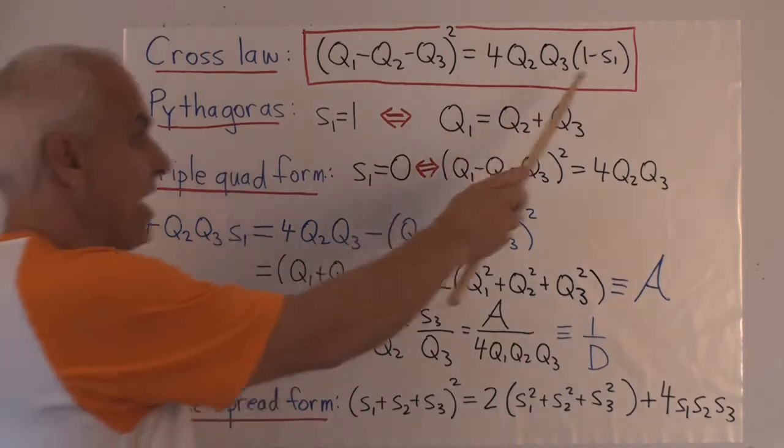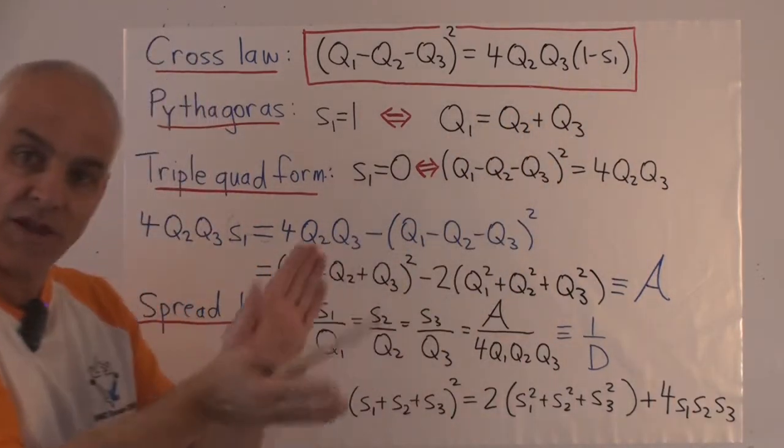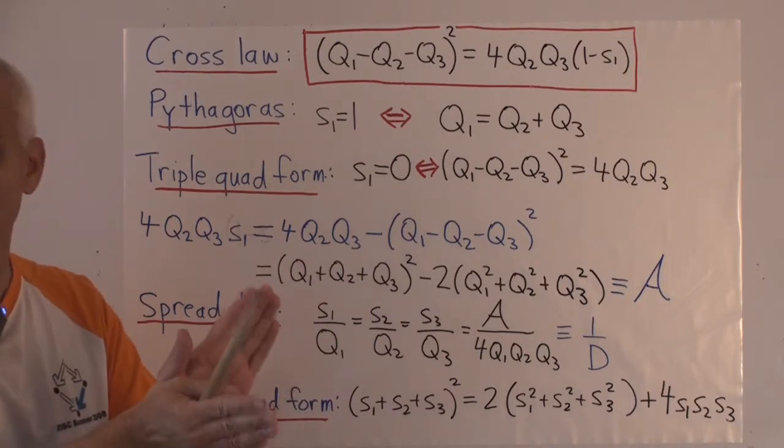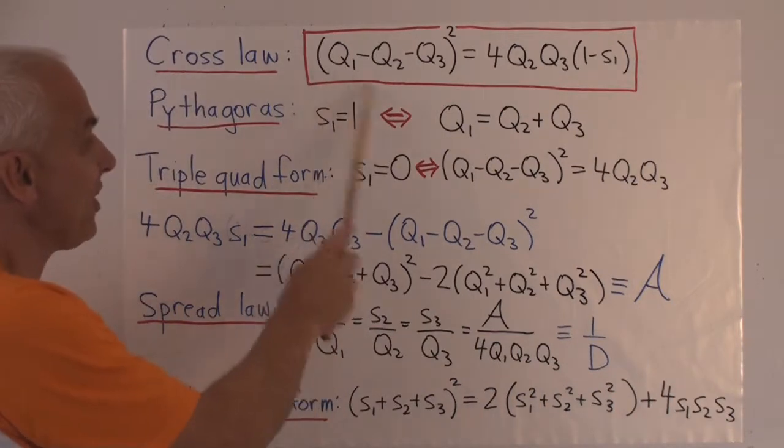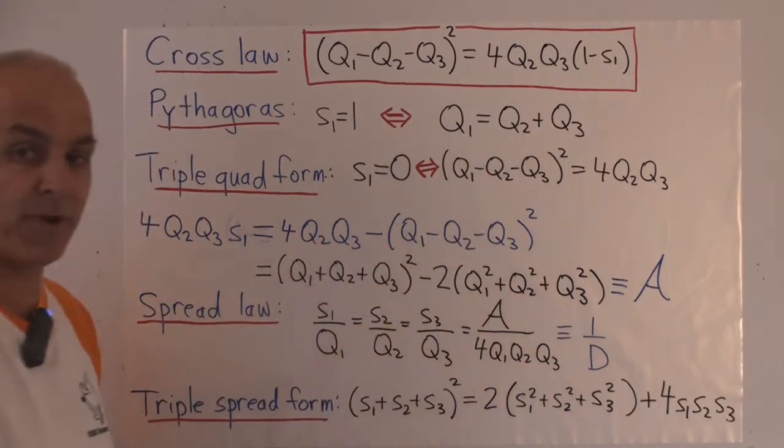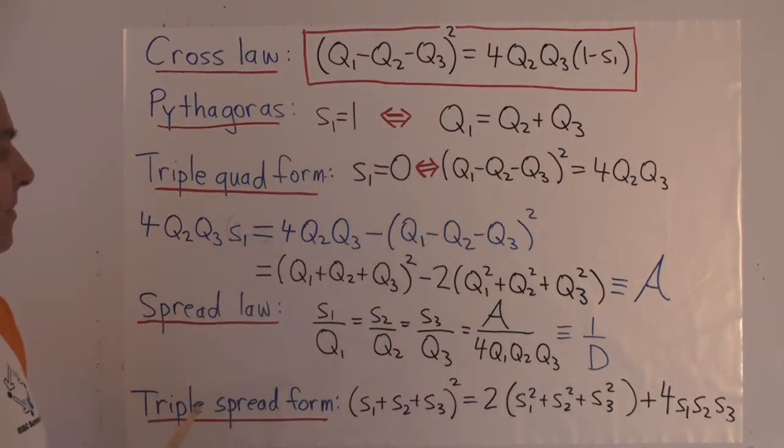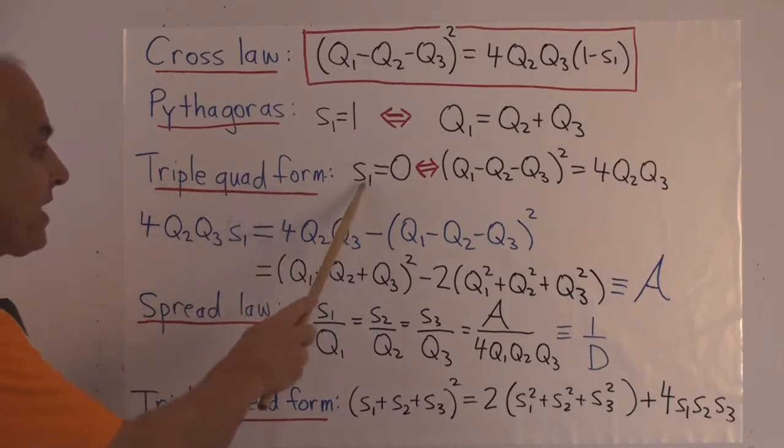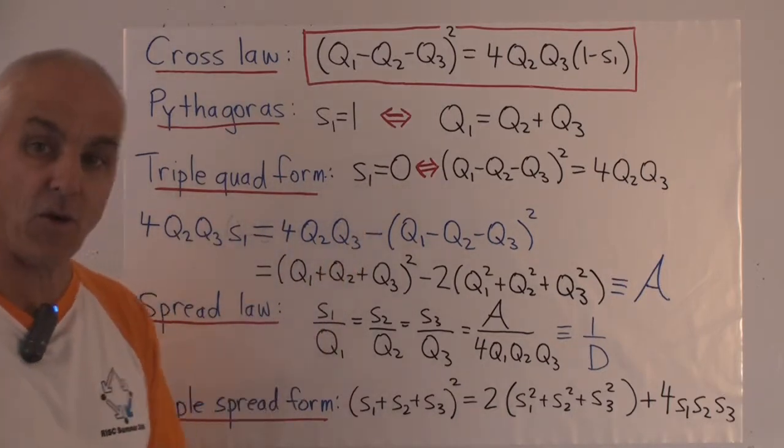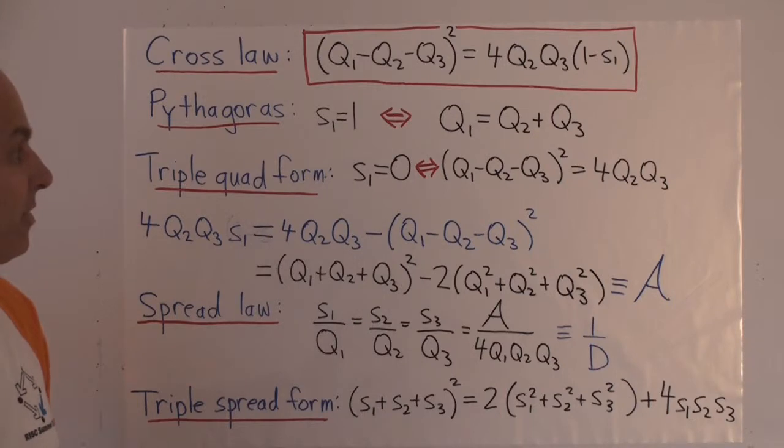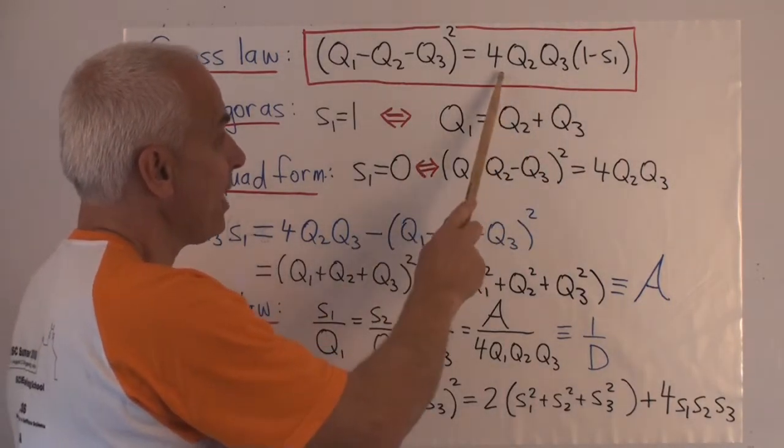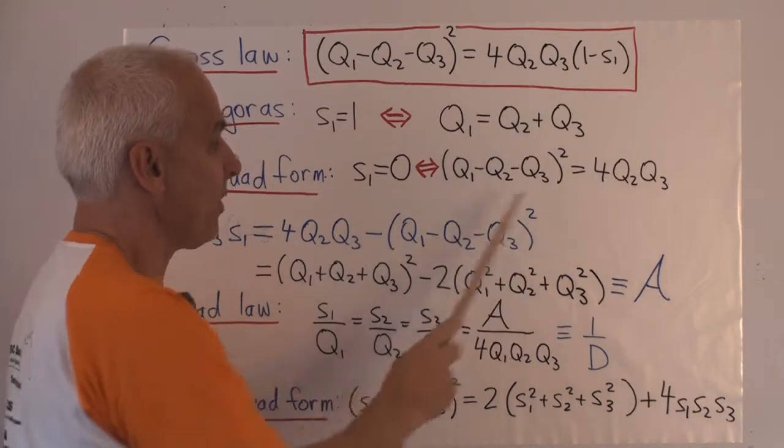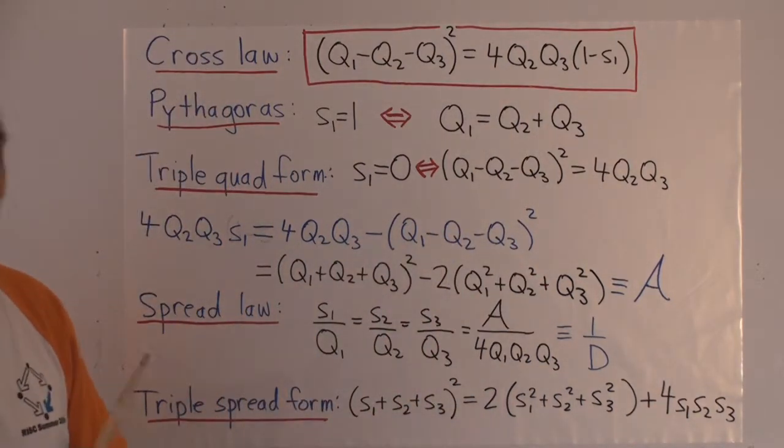Pythagoras' Theorem. If S1 equals 1, in other words if the two sides are perpendicular in the red sense, well then this quantity over here becomes zero and we see that Q1 equals Q2 plus Q3 and conversely. The triple quad formula. That's the case when the three points are collinear or the spread between them is zero. If this is zero, then this squared equals four times Q2, Q3. That's one form of the triple quad formula.